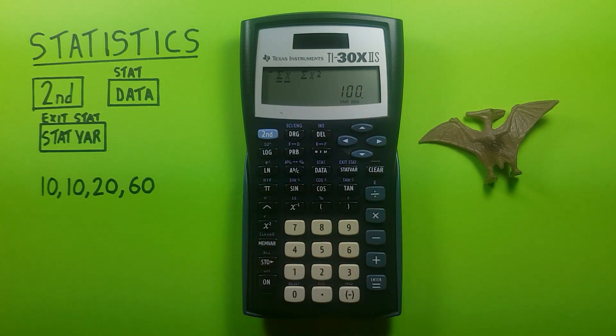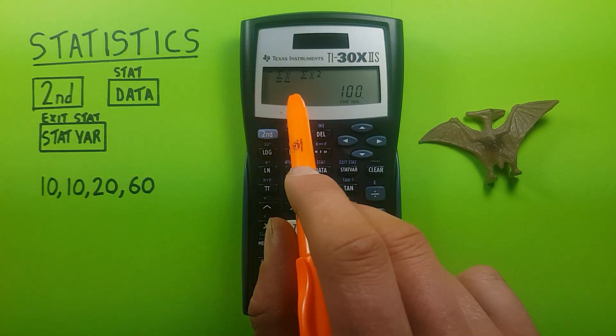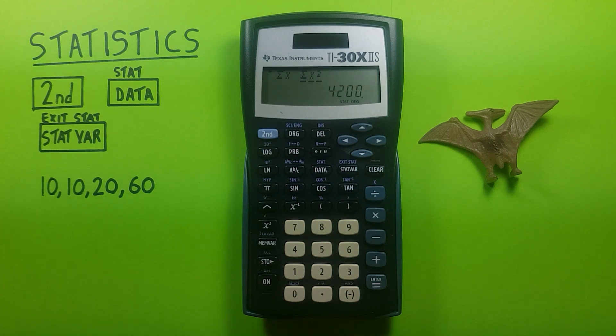10 plus 10 plus 20 plus 60 equals 100. Yep, that's correct. So that's everything added together. And then the sum of the squared variables, or sum of squares. All right, that's all the data we get from this calculator.